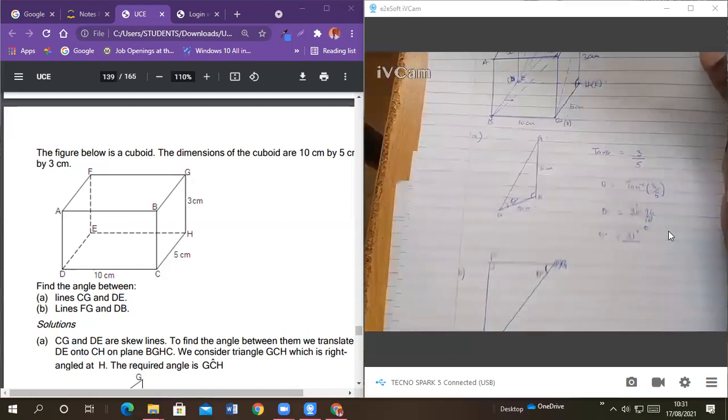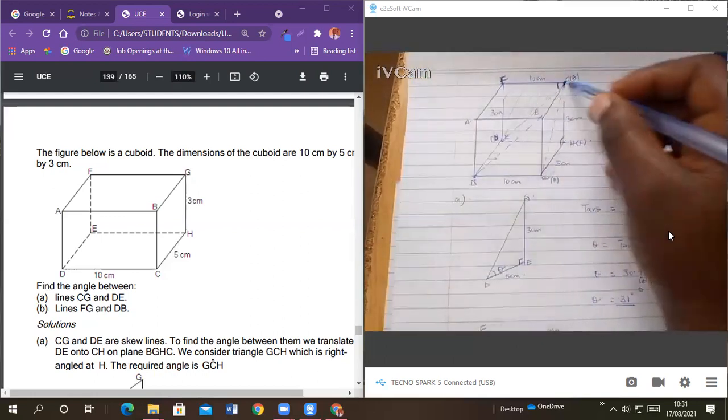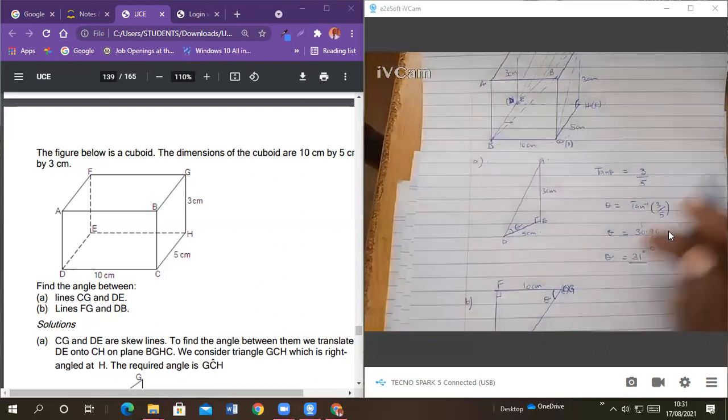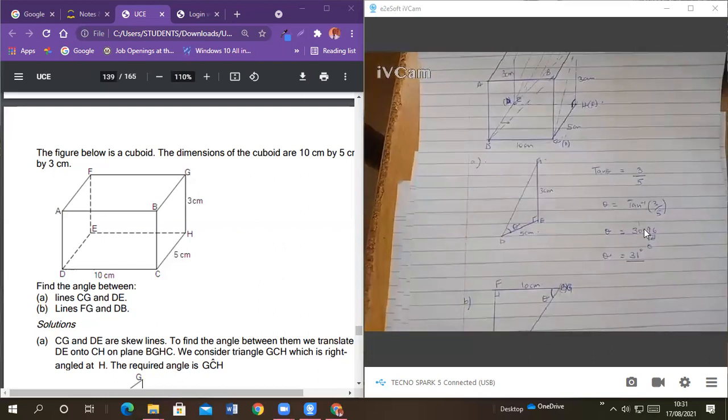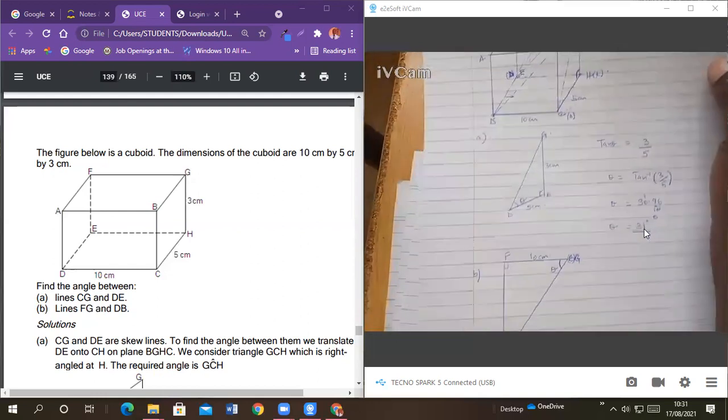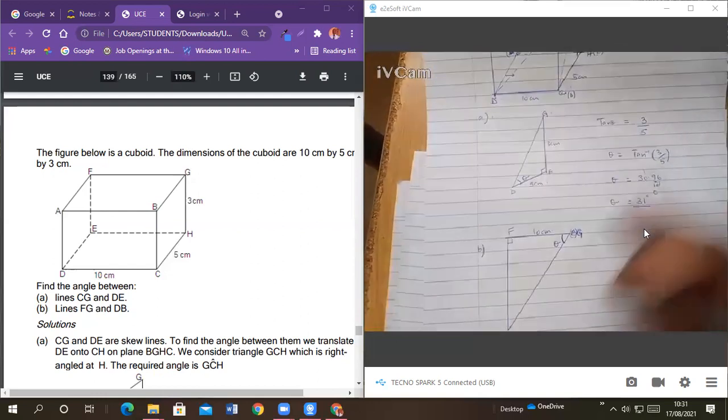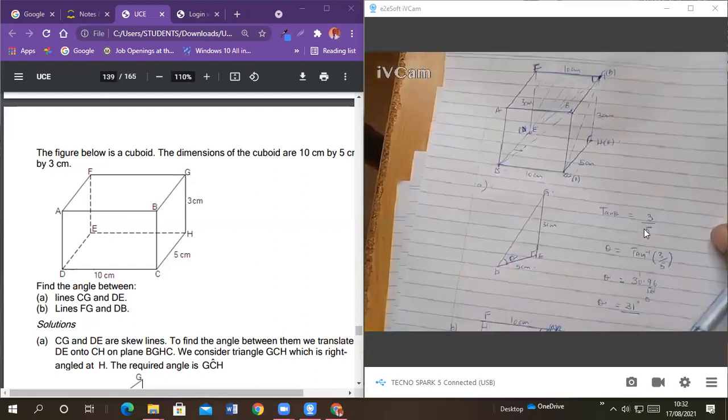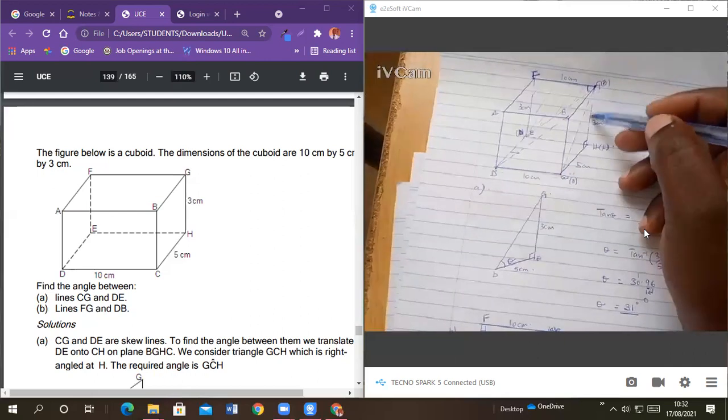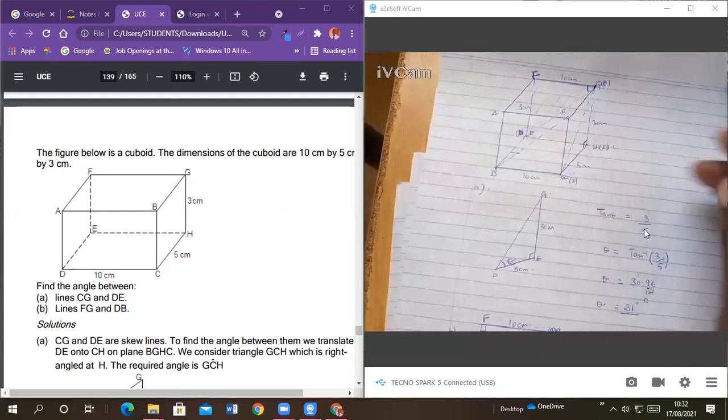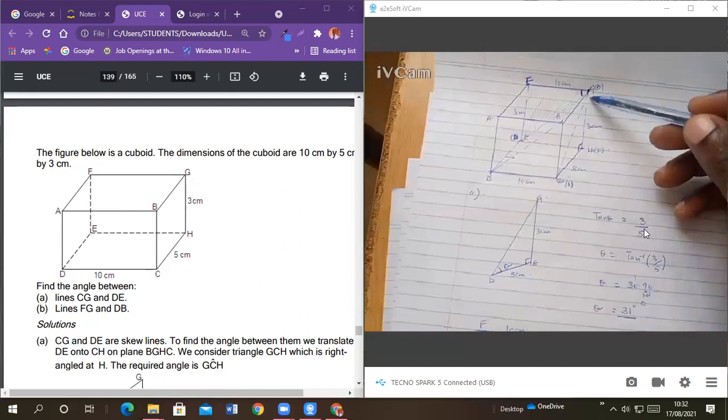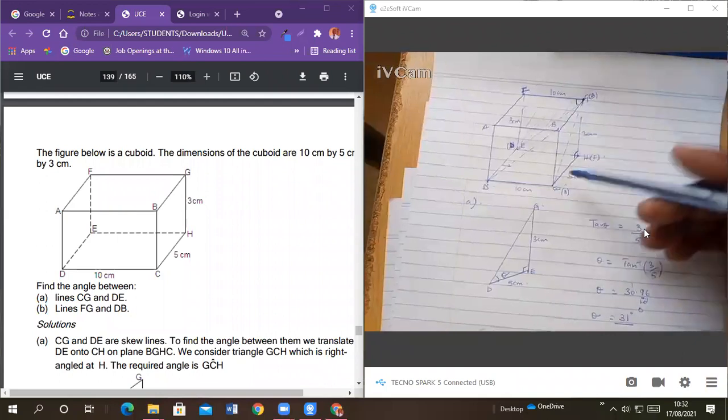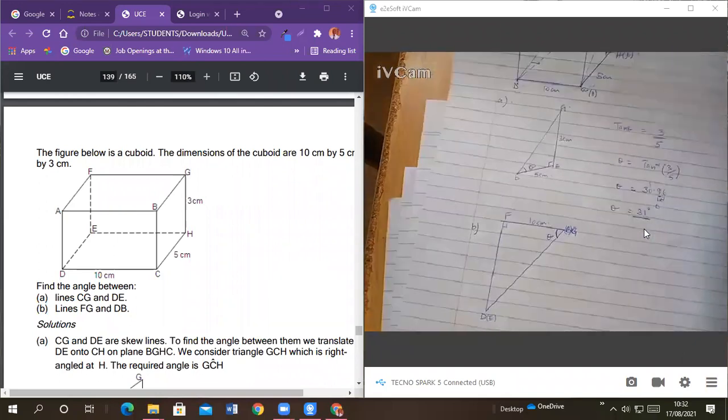So from there it means that also, so this is 10, also means that this is 10. So what about BF? So BF, what's the side of BF? So if this is 10, this is 10, this is 10, it means that also this is 10. BF, so I'll put here 10 centimeters.